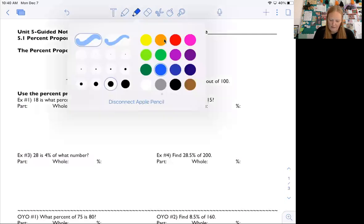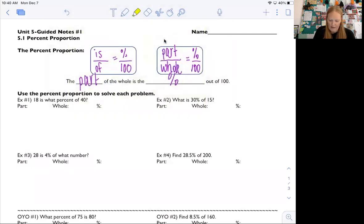Notice, I'm going to go to yellow here, that is and part are in the same spot in these proportions. So whenever you see the word is, that represents a part of something. Now on the bottom, notice the word of is in the same place as the word whole. And so when you see of that represents the whole thing. So what does that mean? Let's look.